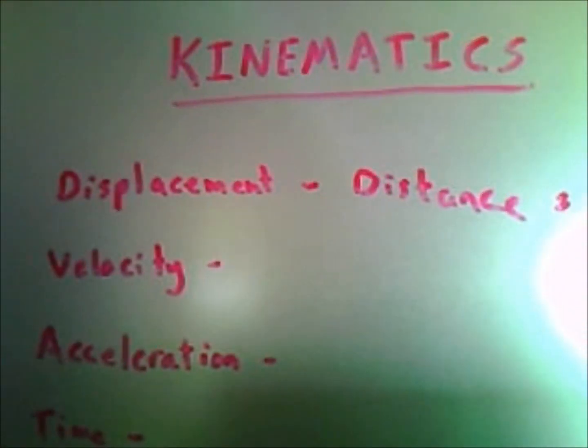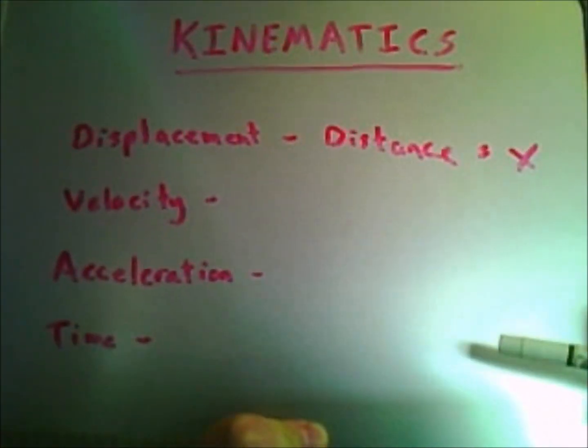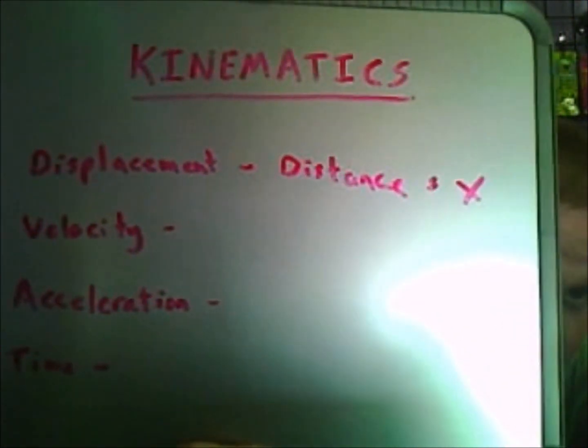Kinematics is the analysis of the different positions and motions of objects as a function of time, without regard to the causes of motion. You have different types of kinematic variables: displacement, velocity, acceleration, and time. Displacement equals x, velocity is in meters per second, acceleration is in meters per second squared, and time is in seconds.